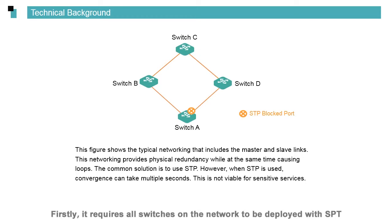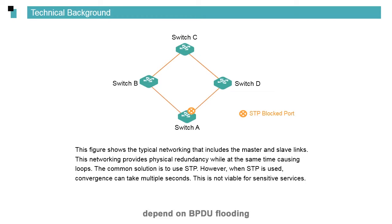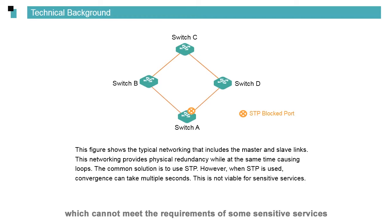STP has two characteristics. First, it requires all switches on the network to be deployed with STP. Second, the data exchanges between STP-enabled switches depend on BPDU flooding. When STP is used, the convergence can take seconds, which cannot meet the requirements of some sensitive services.